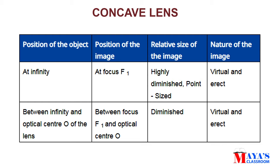For the concave lens: position of the object between infinity and optic center — position of the image is between focus F1 and optic center. Size of the image is diminished and the image is virtual and erect. This covers the convex and concave lens.